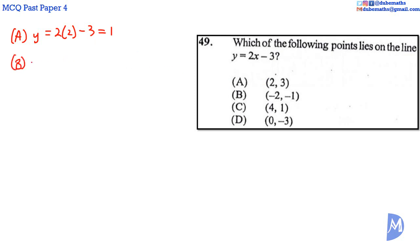In B, Y should equal 2 by negative 2 minus 3. 2 by negative 2 is negative 4. Negative 4 subtract 3 is negative 7, not negative 1. So B is not the answer.